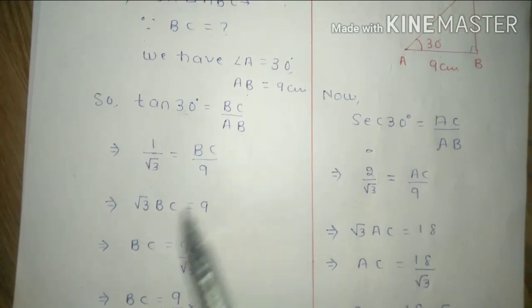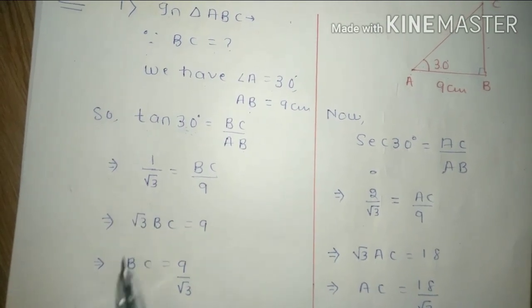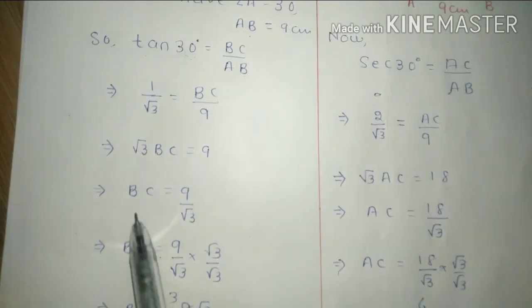Now what do we do, cross multiply. So cross multiply under root 3 into BC and 9 into 1 which is 9. In the next step BC, this was into, it will be divided.